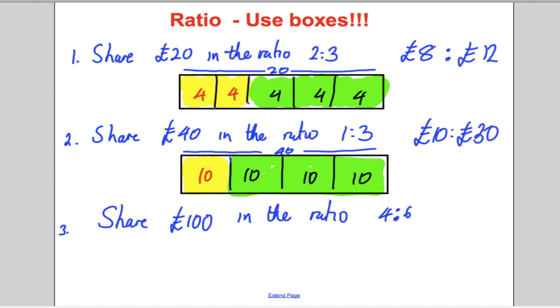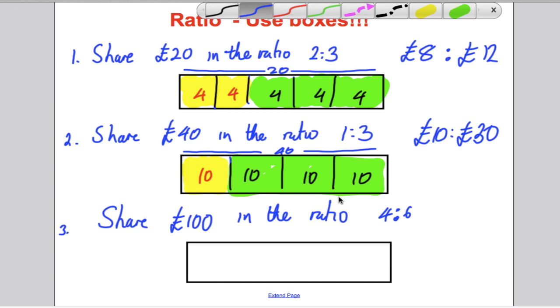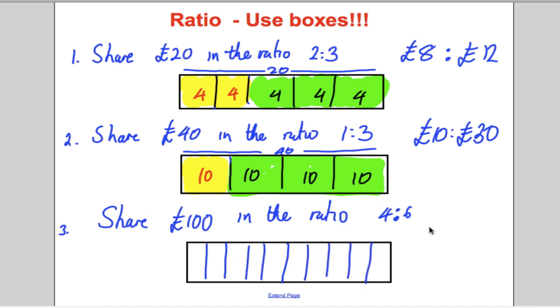And the last one, share 100 pounds in the ratio of four to six. Another box here to represent 100 pounds. You want to divide it into 10 parts because four and six in total are 10. What must go in each box? Well, if you think about it, it must be 10. Because 10 multiplied by 10 is 100. And you want to split it in the ratio of four parts to six parts. So it's going to be 40 pounds to 60 pounds. And we're done there.